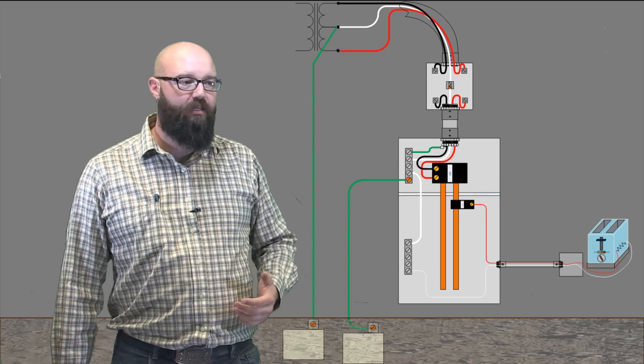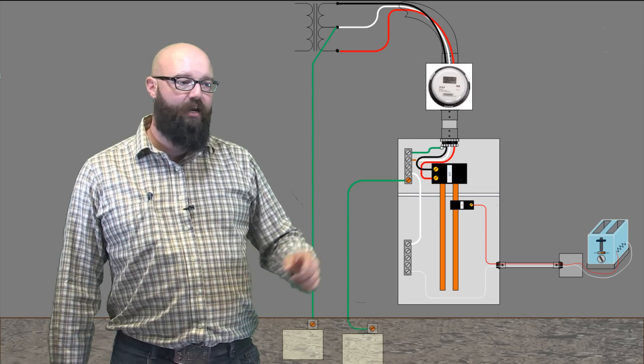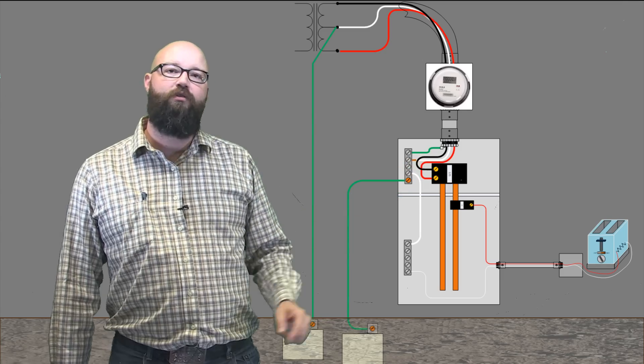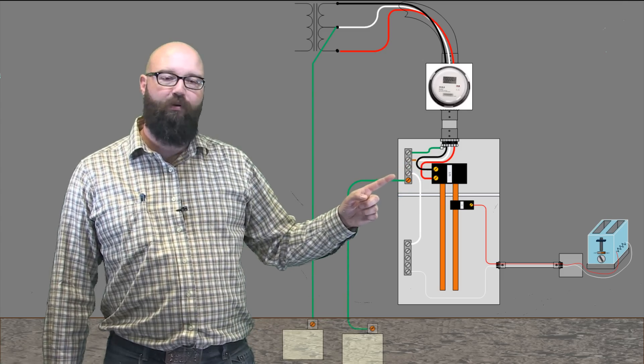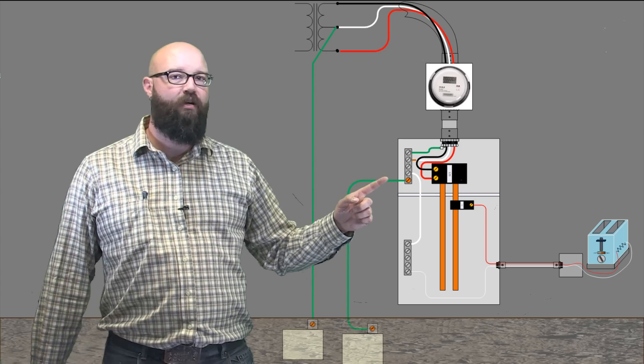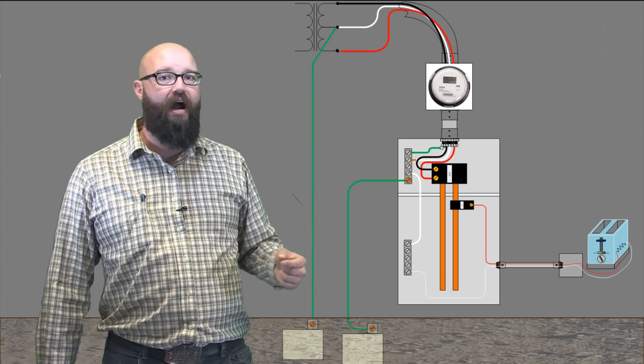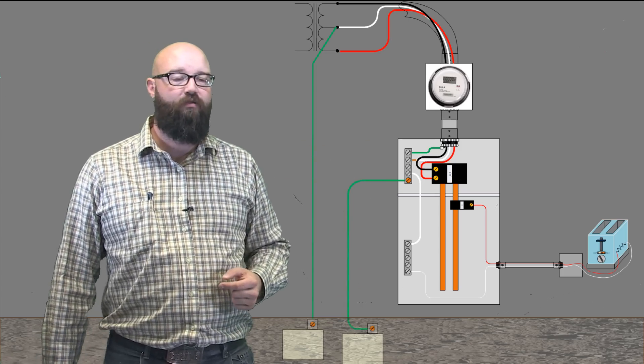Okay, so we'll reset the system. And what we're going to look at now is what happens if we lose this neutral conductor right here. So the neutral, maybe it's pulled out of the panel, who knows, but let's find out what happens. That was our path back to our supply transformer.